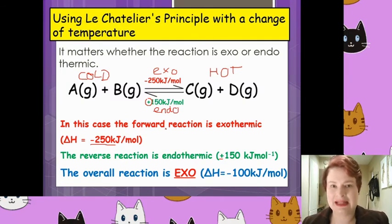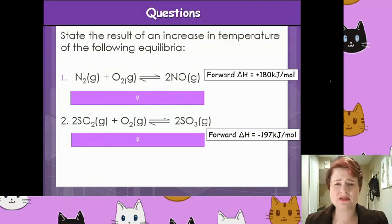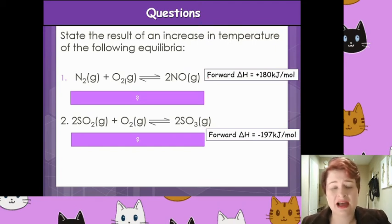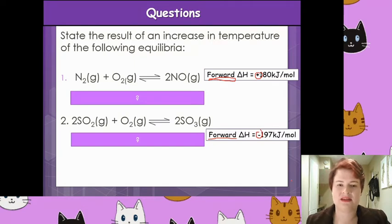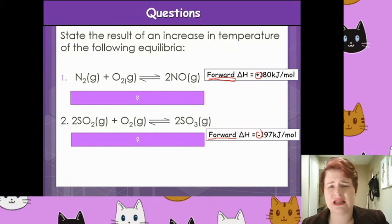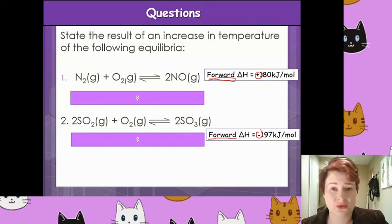Let's see if we can apply this to an example. Here are some questions very similar in style to what we did before, but instead of pressure or concentration, I've just given you the equation. I've not said whether it's a hot or cold side, but I have said if the forward reaction — there's your clue — gives a certain value. Have a go and see what you think would happen to the position of equilibrium.